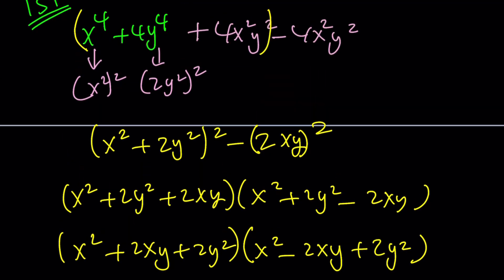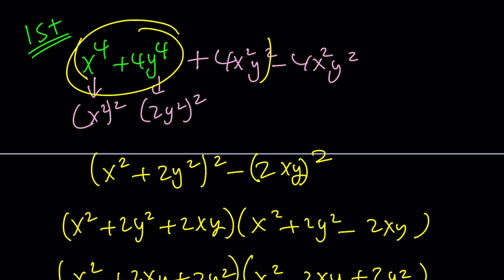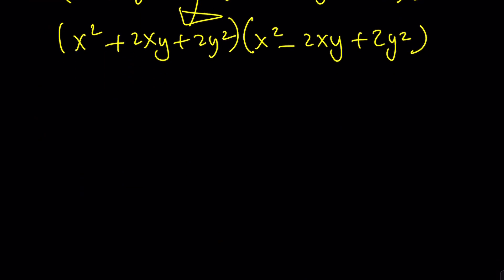This is actually a very important identity because we use this in number theory. A lot of competition problems depend on this, especially if they're asking you to find whether this is a prime number. But let's apply it to our situation because we don't have a 4, but that's perfectly fine.